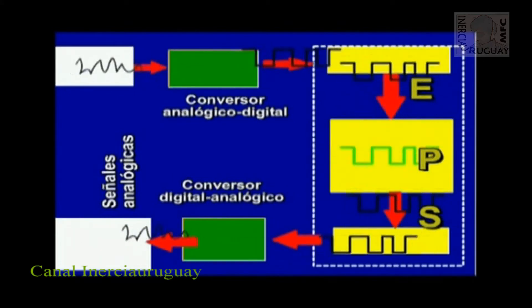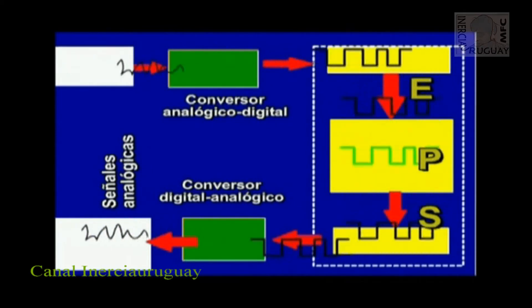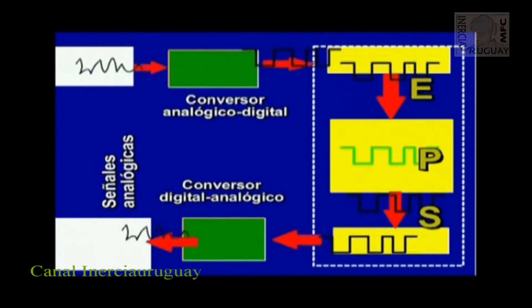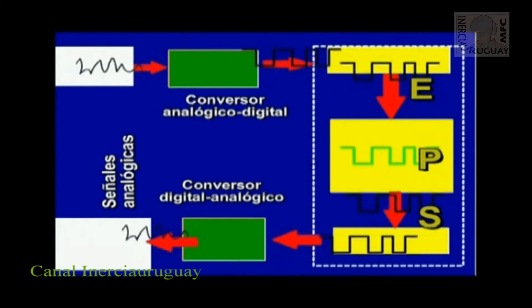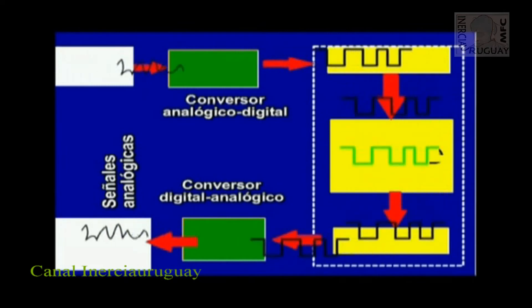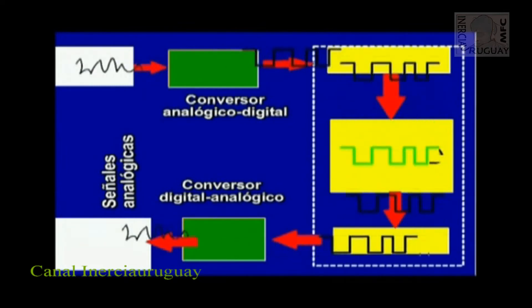De la misma manera, la salida digital del ordenador tiene que convertirse en unos resultados analógicos. Y para ello se necesitan otros interfaces que conviertan las señales digitales en señales o resultados analógicos. Estos son los llamados conversores digital-analógicos.